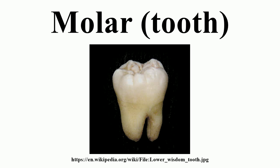Dilambdodont molars have a distinct ectoloph shaped like two lambdas or a W. On the lingual side, at the bottom of the W, are the metacone and paracone, and the stylar shelf is on the labial side. A protocone is present lingual to the ectoloph. Dilambdodont molars are present in shrews, moles, and some insectivorous bats.